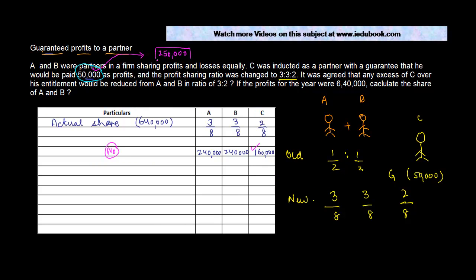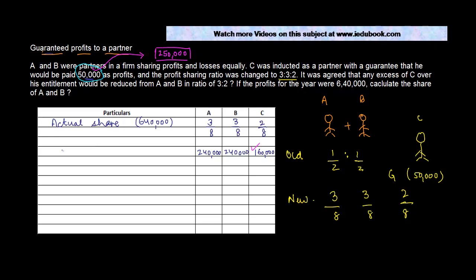In this revised example, the guaranteed profit to C was two hundred and fifty thousand. C's actual share of profit is one hundred and sixty thousand. His entitlement under the agreement is two hundred and fifty thousand. So the shortage is two hundred and fifty thousand minus one hundred and sixty thousand, which equals ninety thousand. C is supposed to get ninety thousand more from the firm.